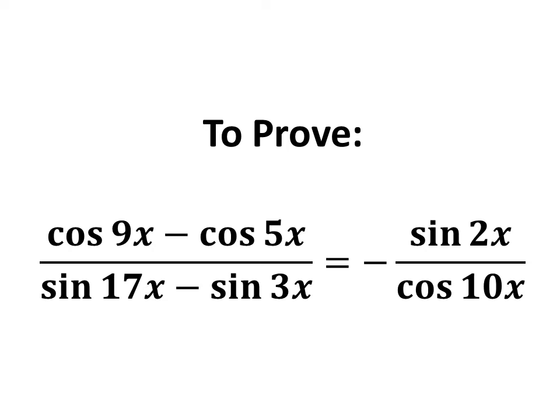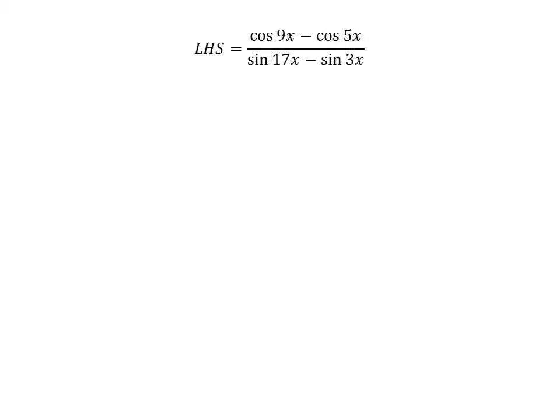In this video, we will learn to prove the equation: cosine of 9x minus cosine of 5x, upon sine of 17x minus sine of 3x, is equal to minus sine of 2x upon cosine of 10x. The left-hand side of the equation to be proved is cosine of 9x minus cosine of 5x upon sine of 17x minus sine of 3x.